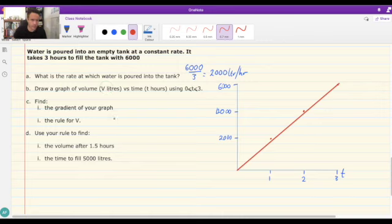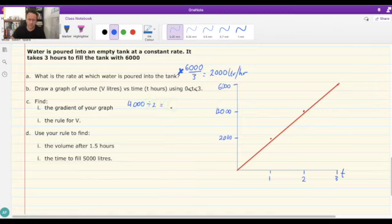Part C, find the gradient of your graph. We've already found it up here, technically, but it's saying find the gradient from your graph. Let's pick a point. Let's say that after 2 hours, it's risen by 4,000, so we can use that. So 4,000 divided by 2 equals 2,000. That is the gradient. It seems big, but that's the gradient. It's going up 2,000 litres for every one hour.